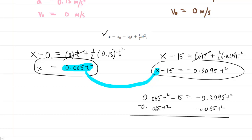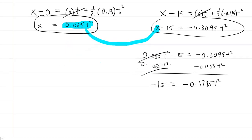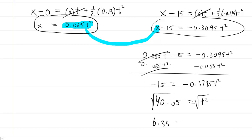The right-hand side becomes negative 0.3745 t squared. Dividing both sides by negative 0.3745 gives 40.05 equals t squared. Taking the square root of both sides, we get a time of approximately 6.33 seconds — that's how long it takes for them to meet.